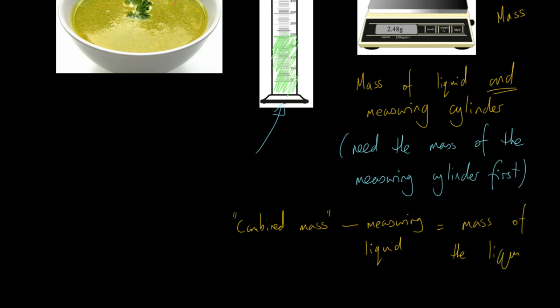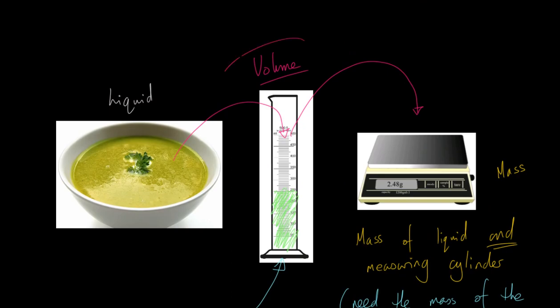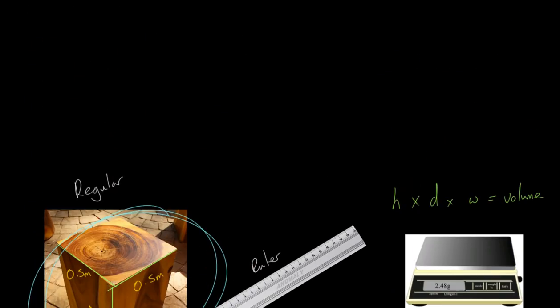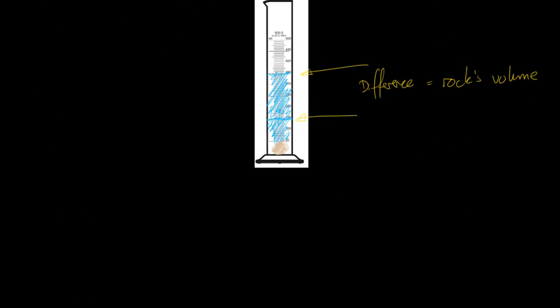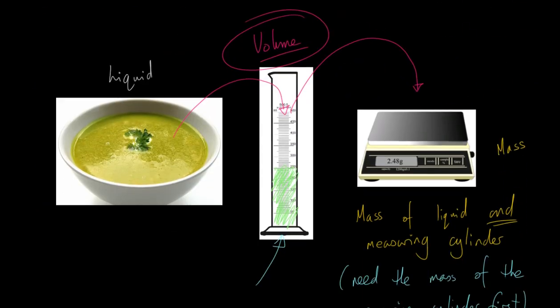Deduct the mass of the measuring cylinder from the combined mass, and that gives you the mass of the liquid only. Now you have your mass and your volume, so you plug them back into the density equation — density equals mass over volume — and you can work out the density of your liquid. So three similar but different methods, all to do with measuring the density of different materials. Thank you very much.